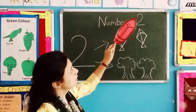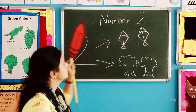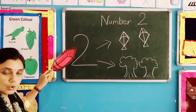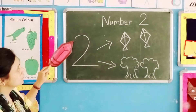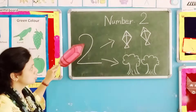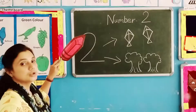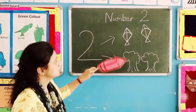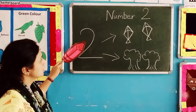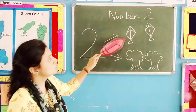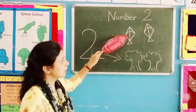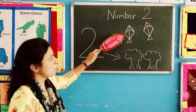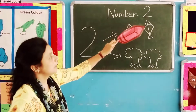Number 2. Which number is this? This is number 2. Look, which number is this? Number 2. Number 2 means 2 objects. Number 2 — 2 cards. Count: 1 and 2. 1 and 2.